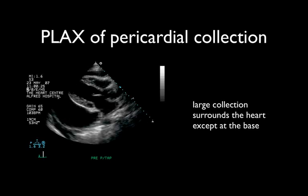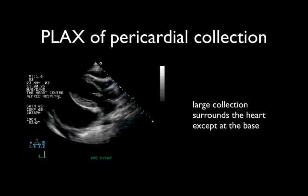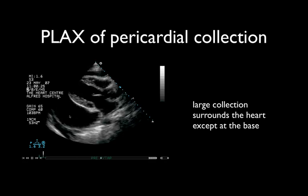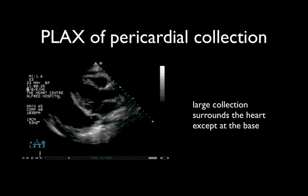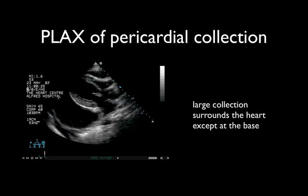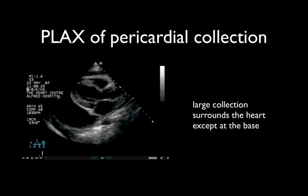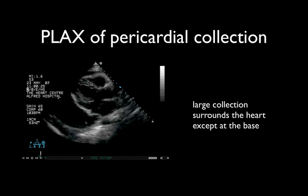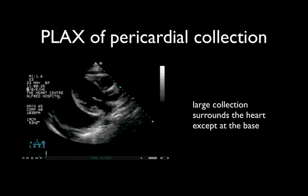Here is a parasternal long axis view of a patient with a large pericardial effusion, seen as a black space surrounding the heart within the pericardium. It's tracking anterior to the descending aorta, as opposed to this pleural effusion which is in a more posterior plane. The fluid can be seen entirely surrounding the heart except where the heart is tethered at its base.